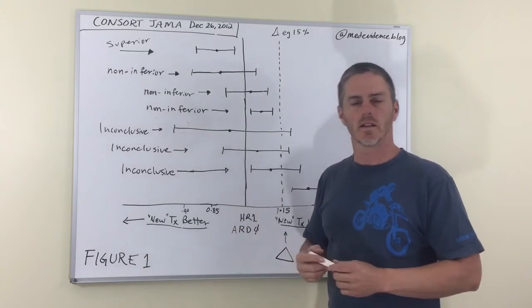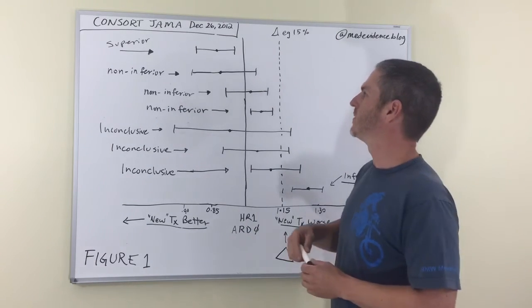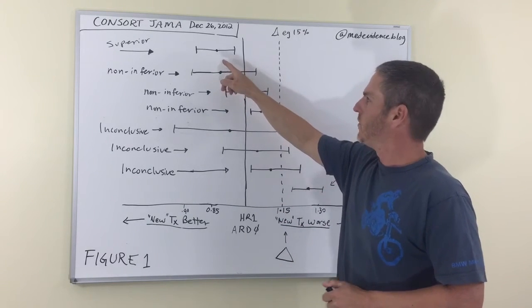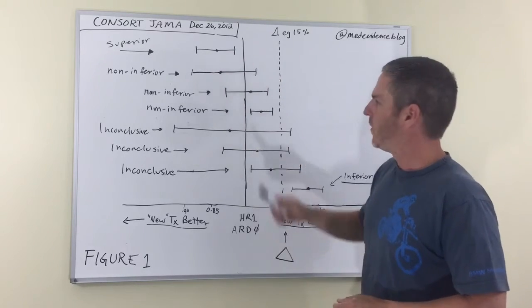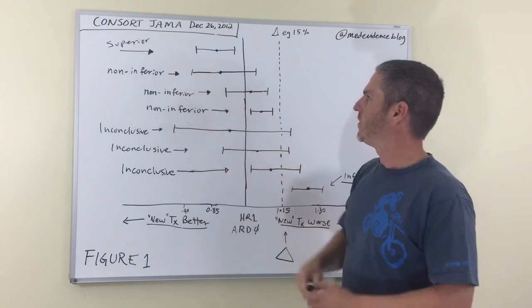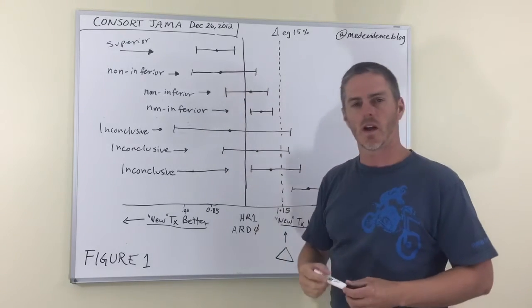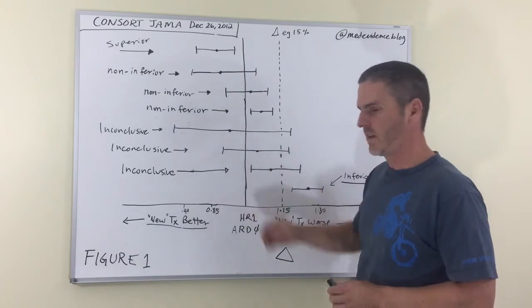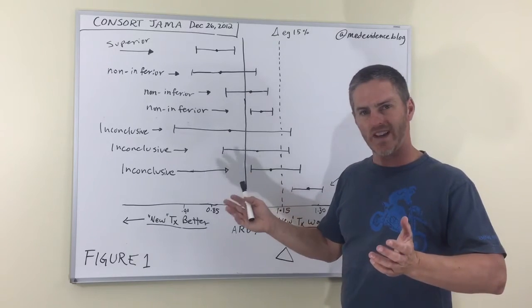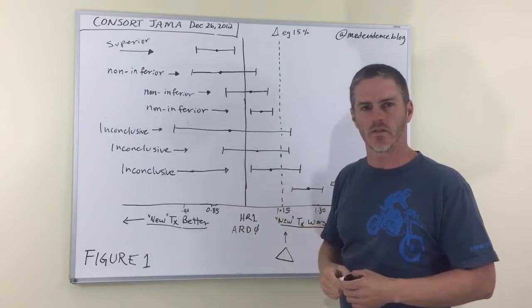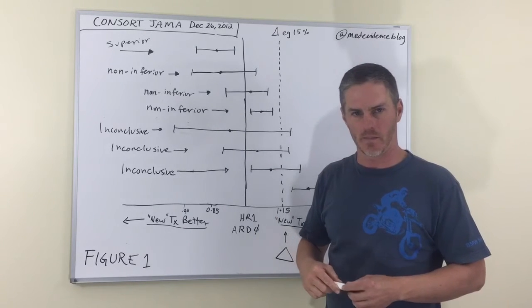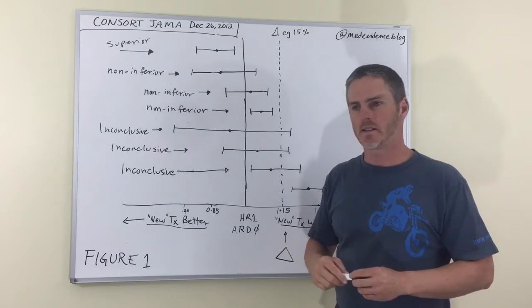Supposing you're testing dabigatran versus Coumadin for some kind of clotting disorder or atrial fibrillation. And you find that your point estimate falls on the side favoring dabigatran or the new treatment. And your 95% confidence interval does not include a hazard ratio of one or an absolute risk difference of zero. You can have a statistically significant difference then, and the CONSORT authors say that we can declare superiority on the basis of that. For now, let's say that's fine.